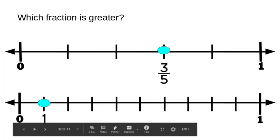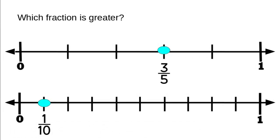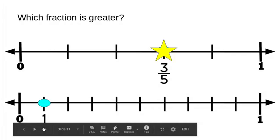Here we have two number lines broken up into different segments. The first is broken up into fifths and the second into tenths. The first number line shows three fifths and the second shows one tenth. The question is which fraction is greater — which one is closer to one? Three fifths is greater than one tenth.